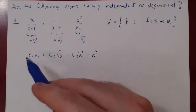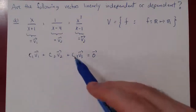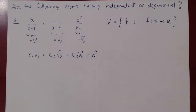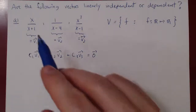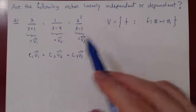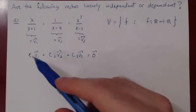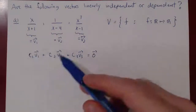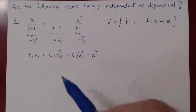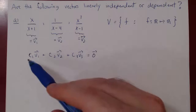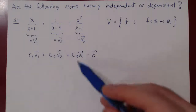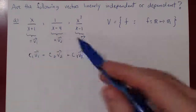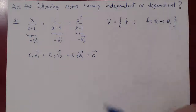The trivial solution c1 = c2 = c3 = 0 is always a solution. If it is the only solution, then the vectors are linearly independent. If we can find more than the trivial solution — that is, one solution where at least one of the coefficients is not zero — then the vectors are said to be linearly dependent.